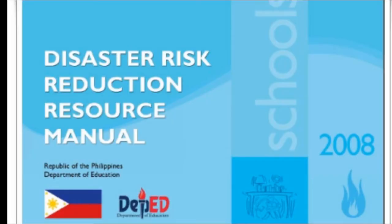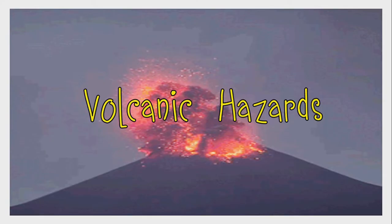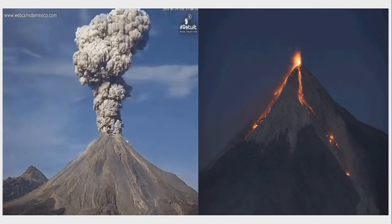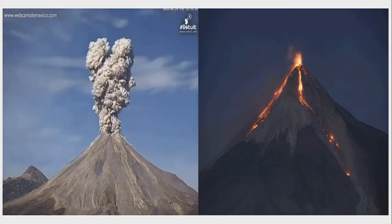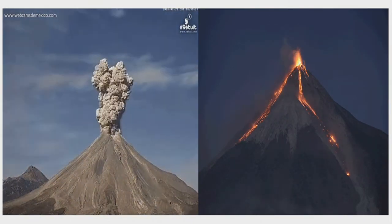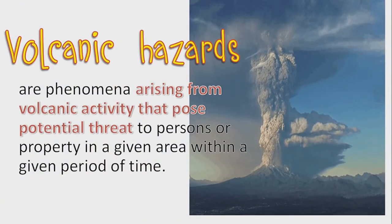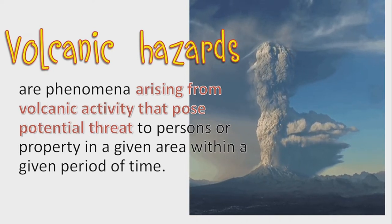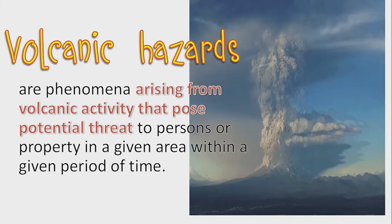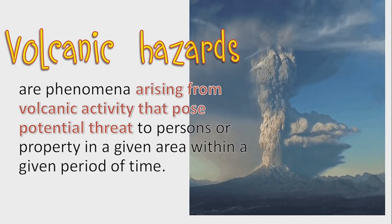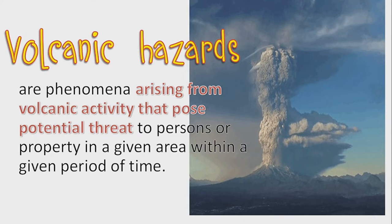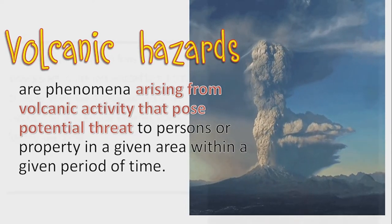Hey, what's up everyone, it's Teacher Del, and today we will have another class in Disaster Risk Reduction Management, focusing on volcanic hazards. What are the different kinds of volcanic hazards and volcanic phenomena? Before we go into that, let us define volcanic hazards. Volcanic hazards are phenomena arising from volcanic activity that pose potential threat to persons or property in a given area within a given period of time.